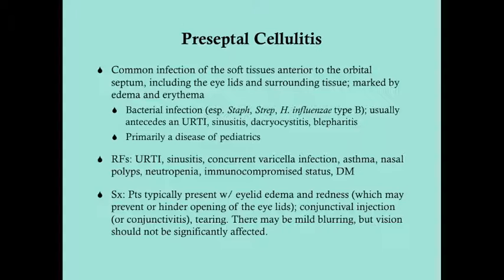A couple of other causes of preseptal cellulitis include smallpox — which has been eradicated in the US, so not a real concern — and anthrax, worth noting in the age of biological terrorism.